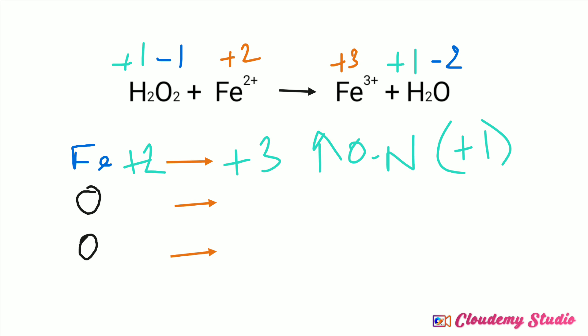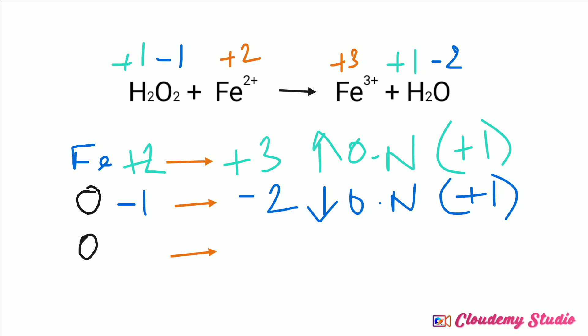In the case of oxygen, the oxidation number changes from minus 1 to minus 2. So here the oxidation number undergoes a decrease — that is reduction. How much does it decrease? From minus 1 it becomes minus 2, so minus 1 minus of minus 2 equals minus 1 plus 2, that is plus 1. So the decrease in oxidation number is plus 1.